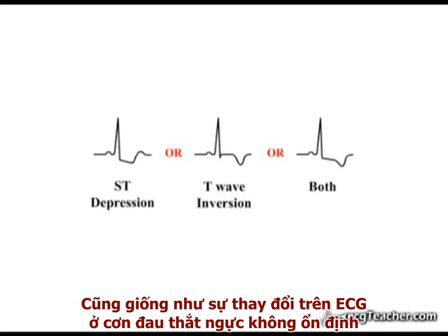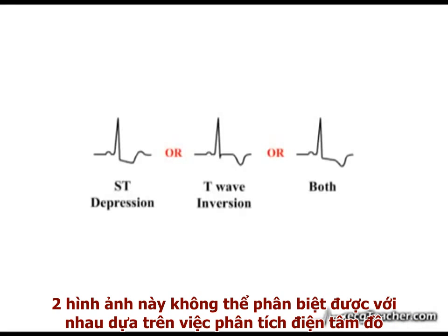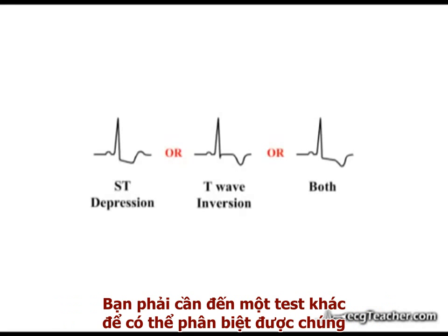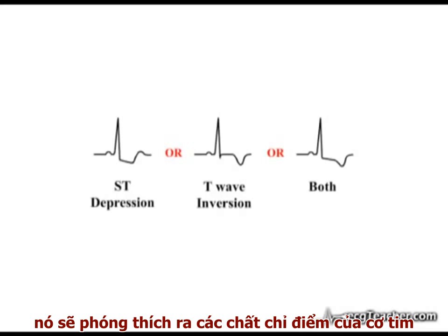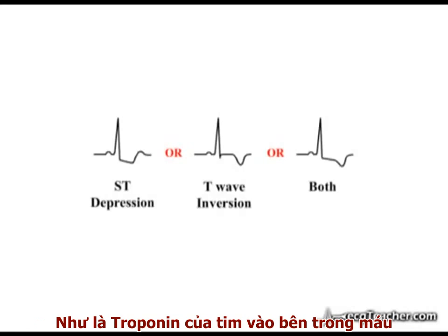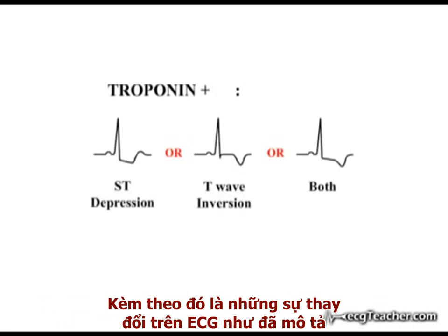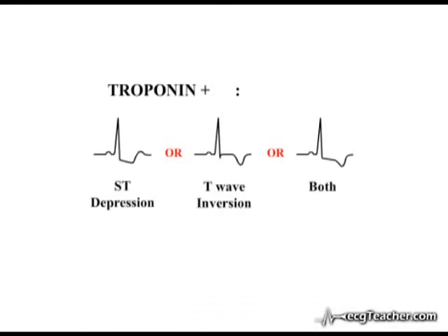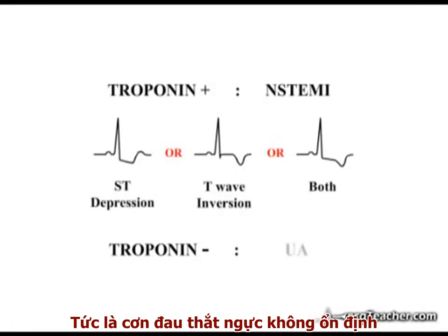As the ECG changes of unstable angina and non-ST elevation MI are identical, the two entities cannot be distinguished based purely on the analysis of the ECG — a second test is needed to separate them. As myocardial muscle dies, it releases cardiac markers such as cardiac troponin into the bloodstream. If the patient develops elevated levels of cardiac markers in association with the ECG changes described, they are said to have had a non-ST elevation MI. If the blood levels remain normal, they have pure ischemia — unstable angina.